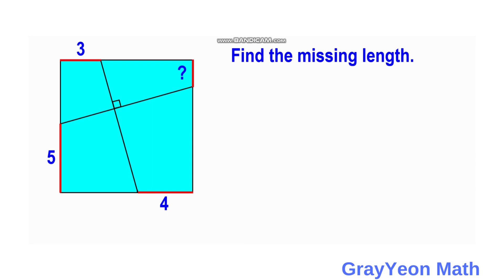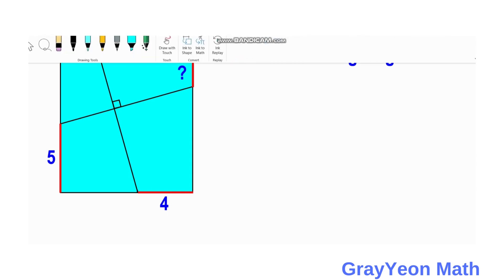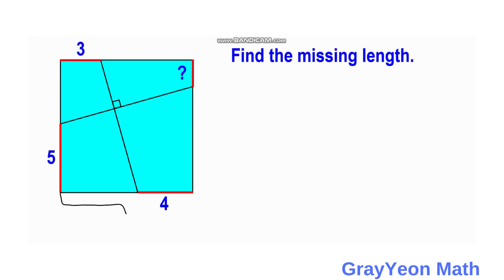First thing that we have to do is we need to label this side of the whole square as S. This is S.